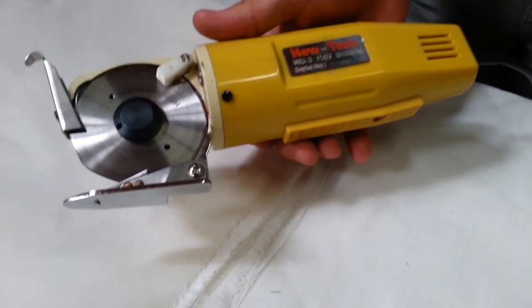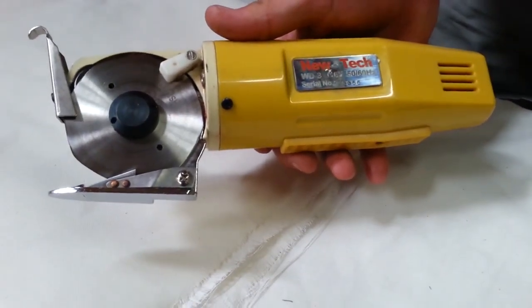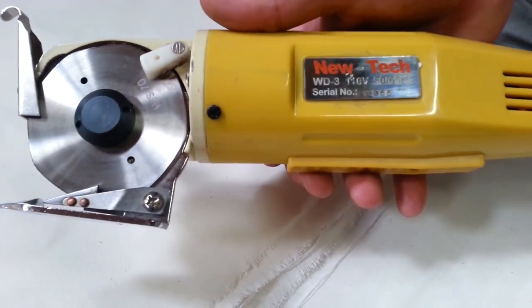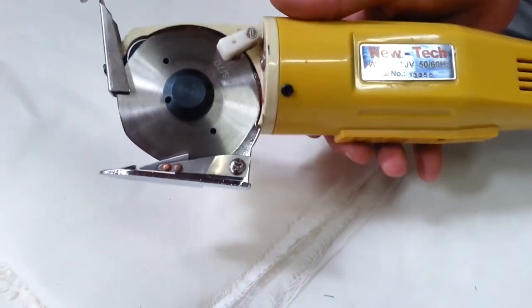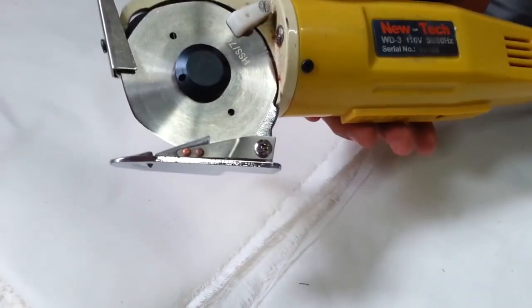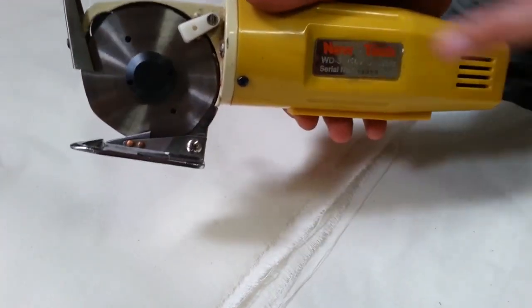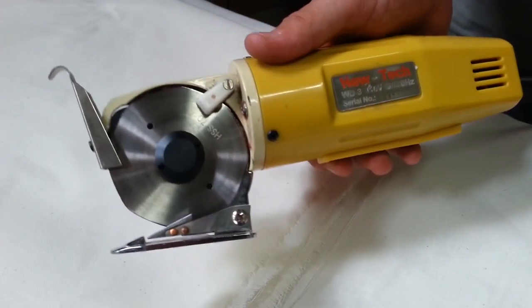I'm going to show you guys how to use one of these NewTech WD-3 110-volt machines - how you could use it and what it's used best for. Very simple machine. We have this machine marked as WD-2 on our website.